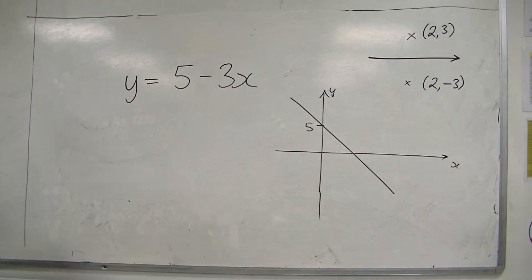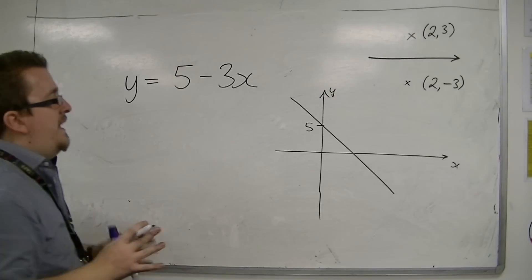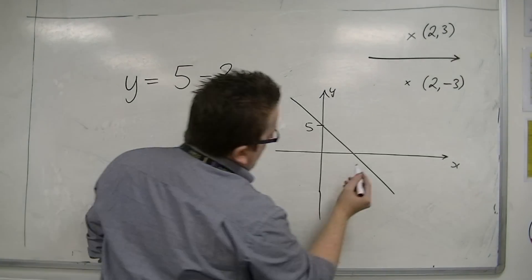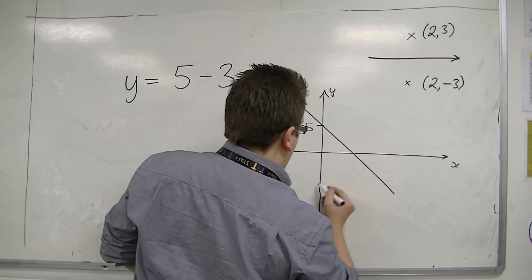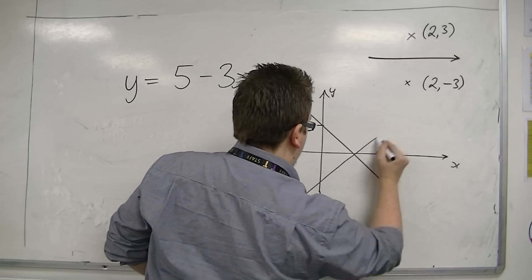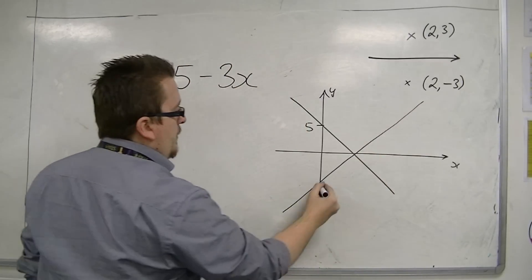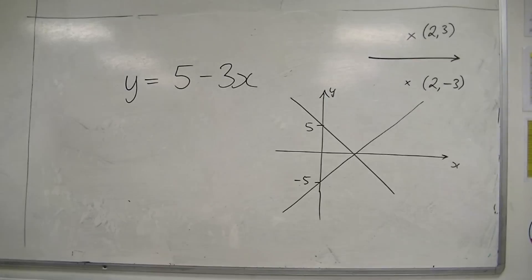And then if I reflect this in the x-axis, then it will now look something like this, now going through -5 on the y-axis.